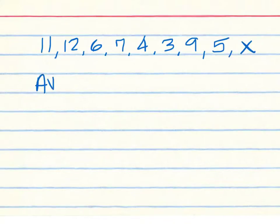In this game, we have an 11, 12, 6, 7, 4, 3, 9, 5, and an X. The average we want to get is 8. We want an average of 8. What's the sum of the numbers we know so far?